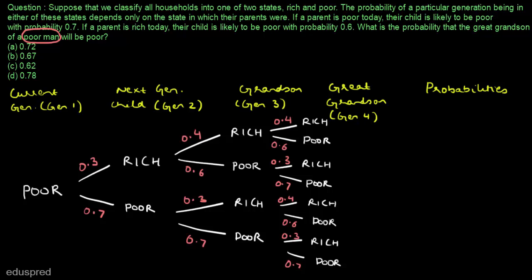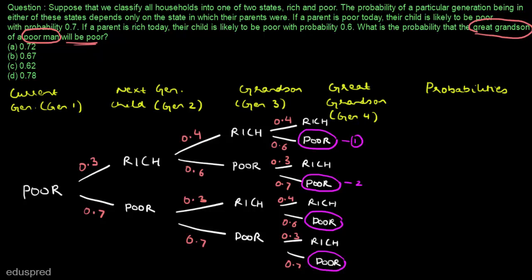So this is the probability structure. Now we have to find the probability that the great grandson of a poor man will be poor. That means we have to find the probability that any of these cases result in a poor great grandson. There are four such cases — case number one, case number two, case number three, and case number four — and if either of these four cases happen, the great grandson of a poor man will be poor.